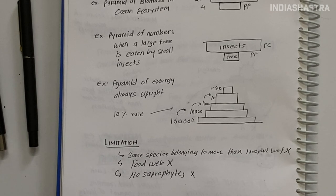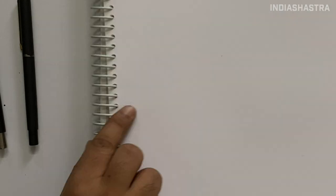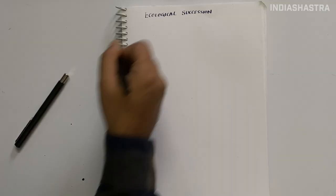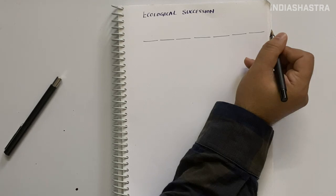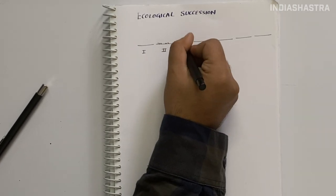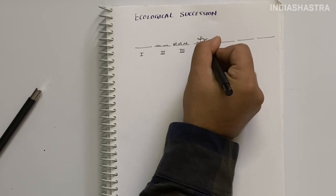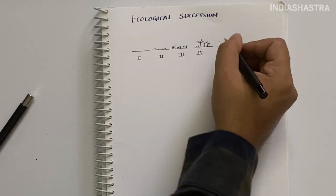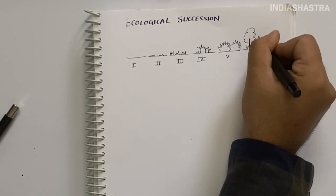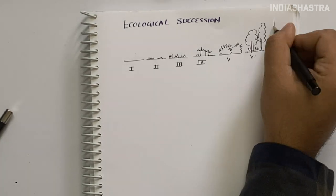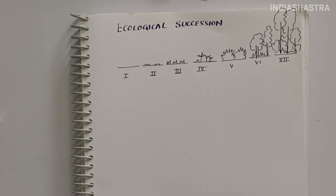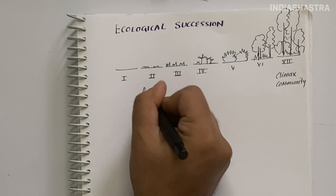A trophic level represents a functional level and not a single species. A single species may become part of more than one trophic level in the same ecosystem depending on the role it plays. Limitations of ecological pyramids: They don't take into account the same species belonging to more than one trophic level. They assume a simple food chain that rarely exists in nature. In nature we find food webs. Ecological pyramids don't explain food webs. Saprophytes are not given a place even though they play a vital role. Saprophytes are fungus or microorganisms living on dead or decaying organic matter.